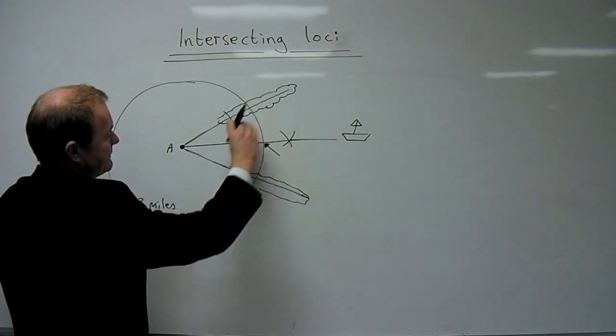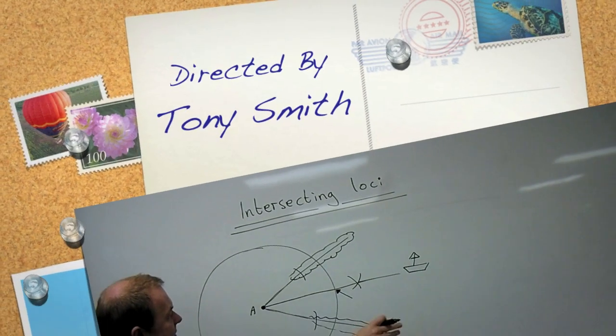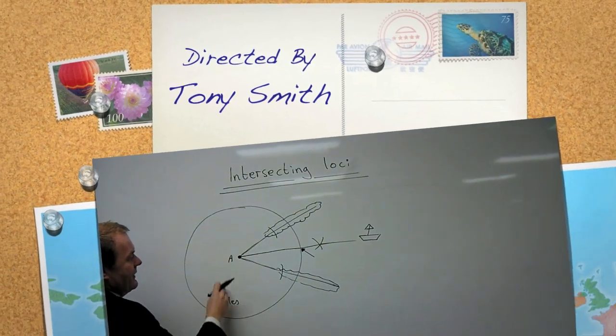So there we've done two lots of loci of points from two intersecting lines and the other, the loci around a single point.